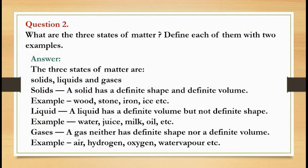Question number 2: What are the three states of matter? Define each of them with two examples. Answer: The three states of matter are solids, liquids and gases. Solids: A solid has a definite shape and definite volume. Examples: wood, stone, iron, ice, etc.